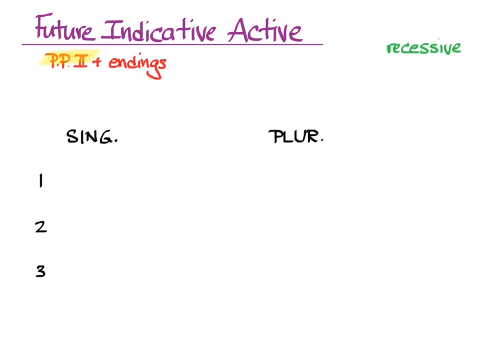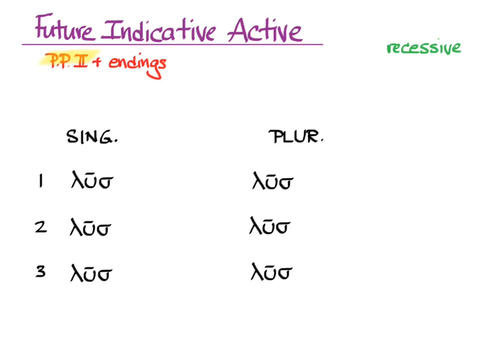Let's start with Principle Part 2. Here we have the persons and numbers filled in with the second principle part stem of luo. Now we need endings: o, ace, a, omen, eta, usi.